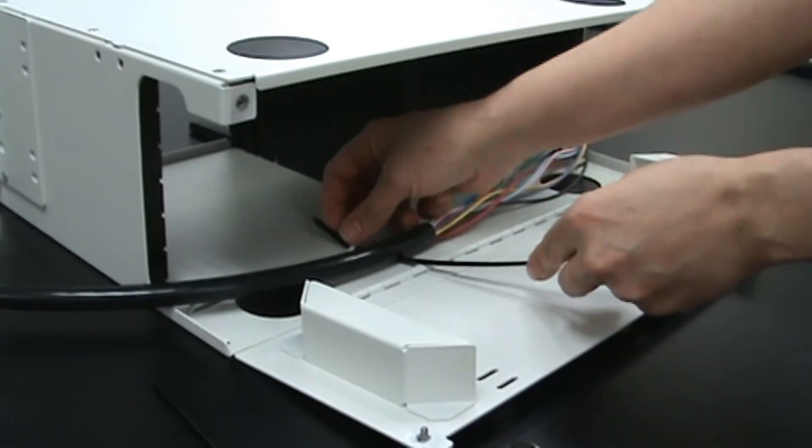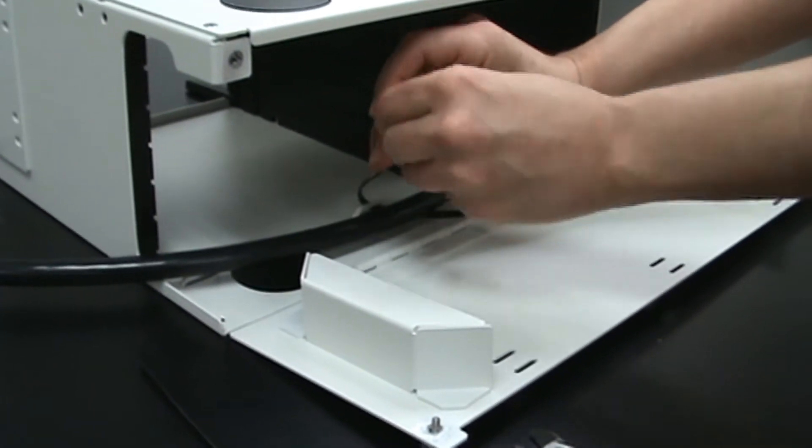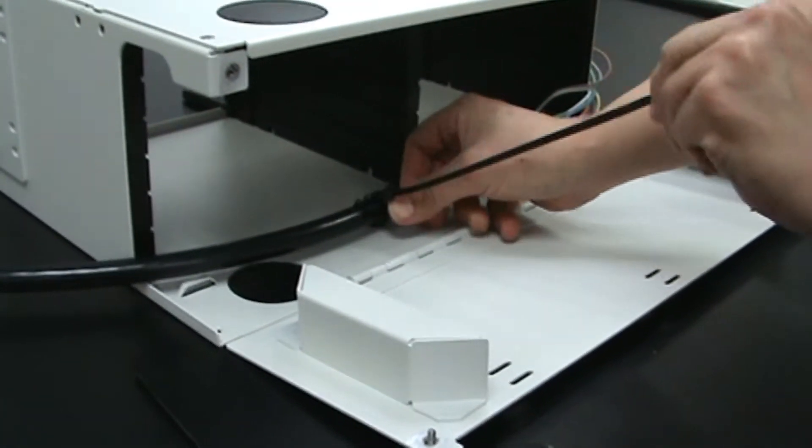Then, secure the network cable to the chassis with the provided tie wraps through the retention loop in the base.